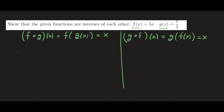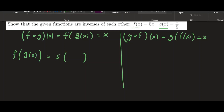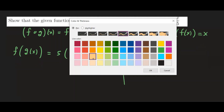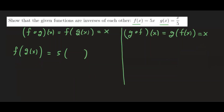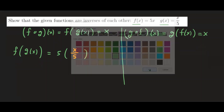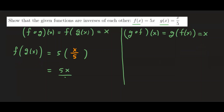Let's do the first one: f of g of x. That means you take the function g, which is x over five, and plug it into f. So f is going to do five times x. In this case, g of x is x over five, so we plug x over five into f of x. This gives us five times x over five, and then the five cancels out. So we get x. The first composition is verified.